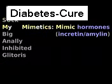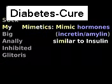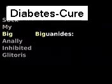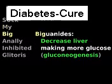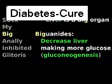Mimetics mimic natural hormones like incretin and amylin that have similar functions to insulin. Biguanide decreases the liver from making more glucose. The liver is a big organ.